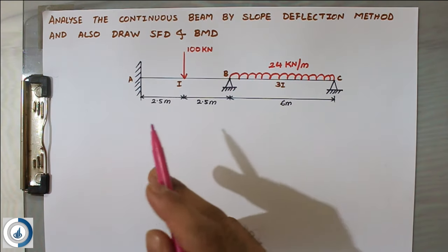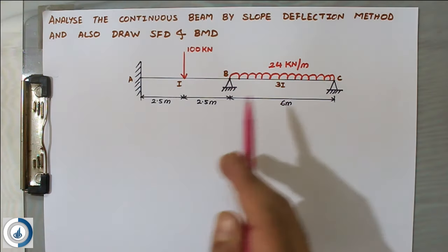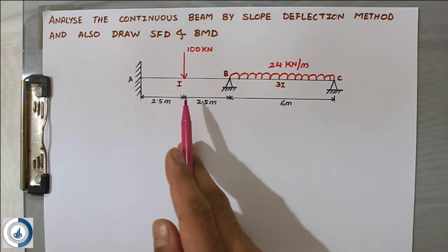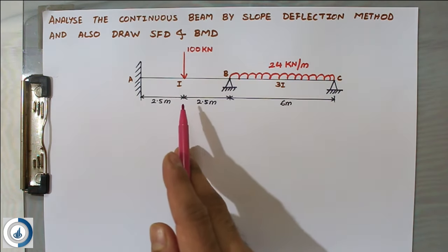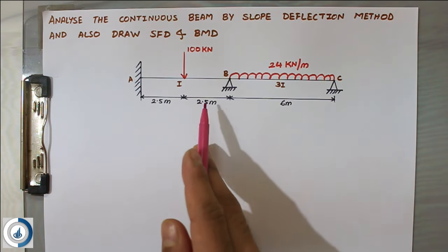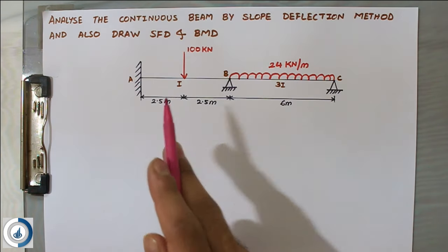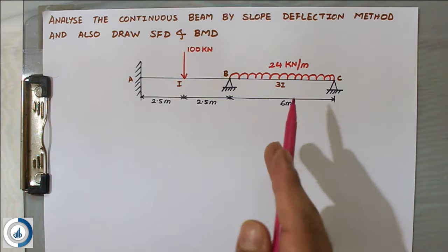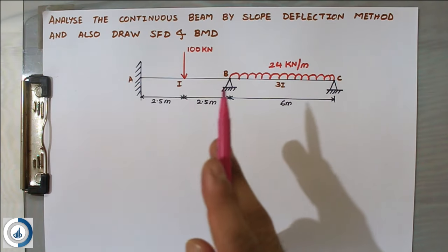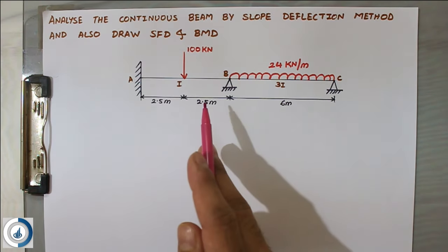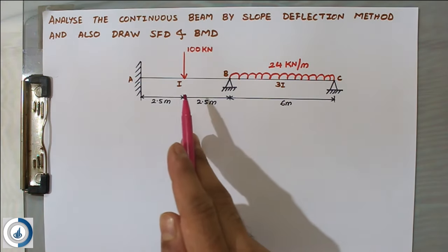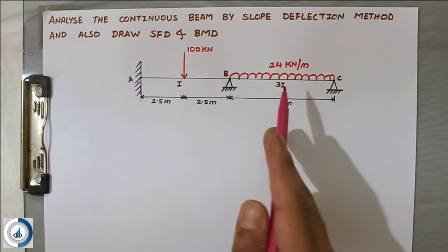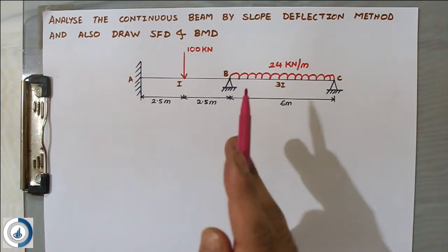In this problem, span AB is 5 meters and the point load is placed at the center — so 2.5 meters and 2.5 meters. Span BC is 6 meters. Also, unlike the last problem where EI was entirely constant, here AB has a value of I and BC has a value of 3I. We have to take care of this while solving the problem.